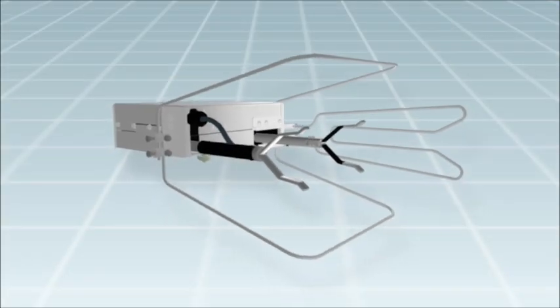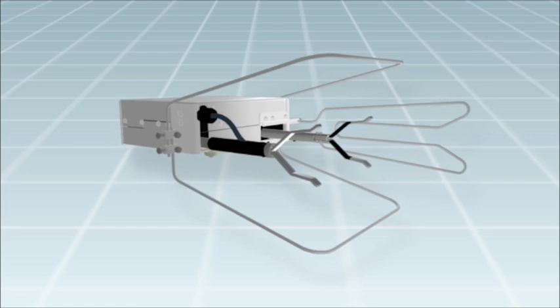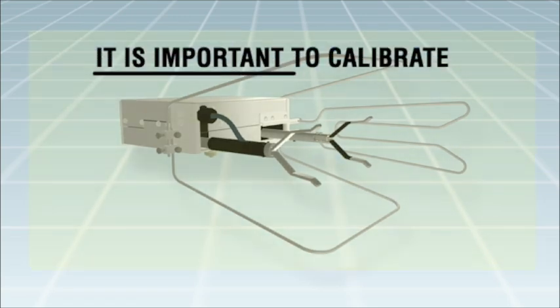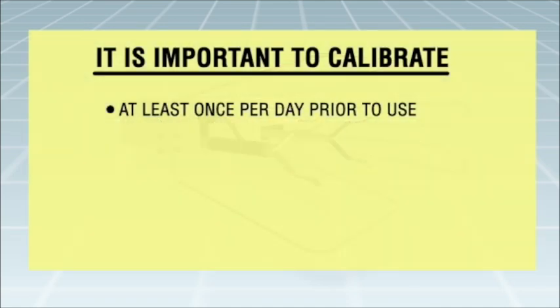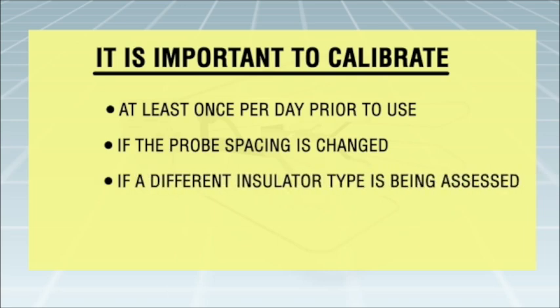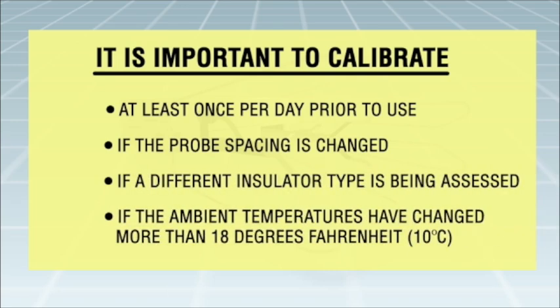Calibration: Before using the polymer insulator tester, it needs to be calibrated. It is important to calibrate at least once per day prior to use, if the probe spacing is changed, if a different insulator type is being assessed, or if the ambient temperatures have changed more than 18 degrees Fahrenheit (10 degrees centigrade) from the time of the initial calibration.